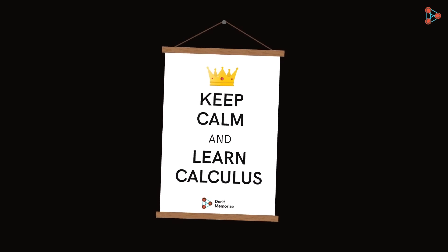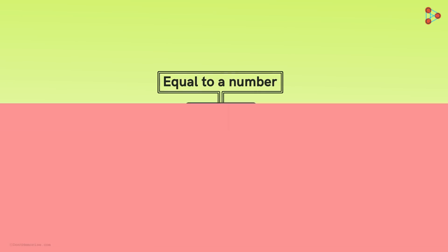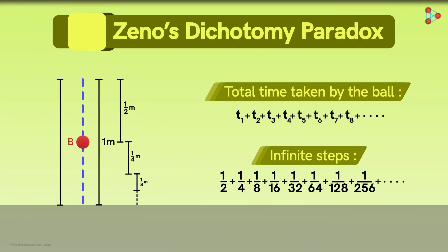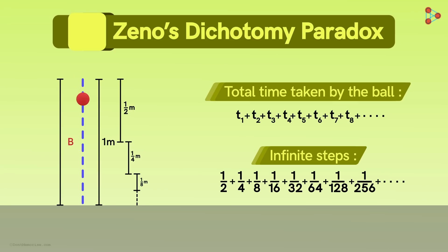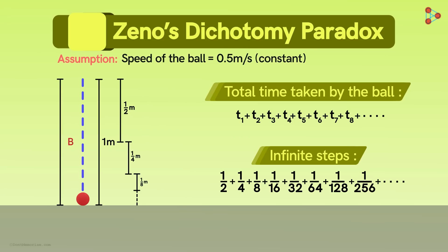To understand calculus, we need to understand the concept of limits first, which we will cover in the upcoming parts. To understand this paradox, let's keep things simple. We know that as the ball is falling, its speed increases. But for simplicity, let's assume the speed of the ball to be constant. So let's say the ball falls with a constant speed of half a meter per second.